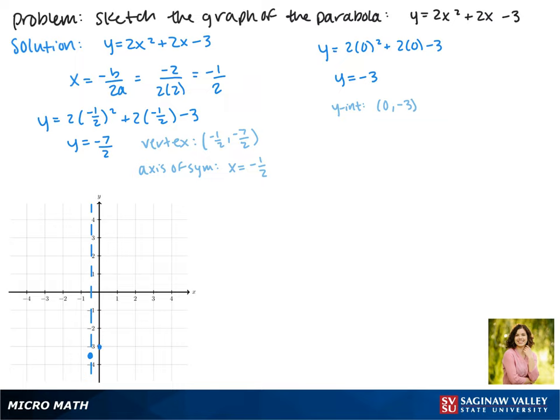Looking at our axis of symmetry, if we have the point 0, negative 3, we can see that negative 1, negative 3 will also be a point.